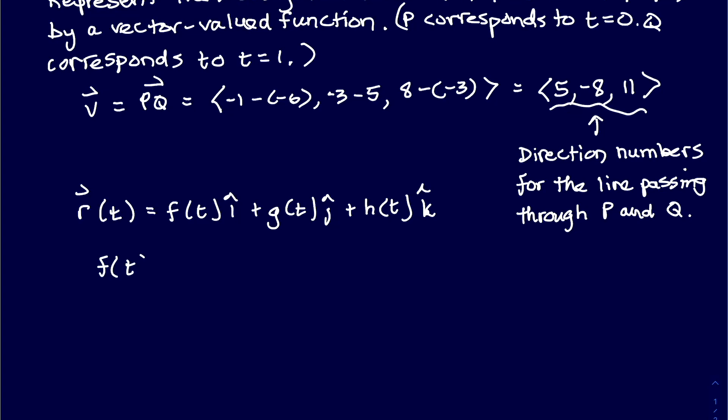So our f(t) would just be what? Good. The coefficient to t is going to be 5 from our direction numbers, so we'll have 5t, and then we can use our point P plus -6, so minus 6. Our g(t) will be -8t, and then looking at point P, we would have plus 5.